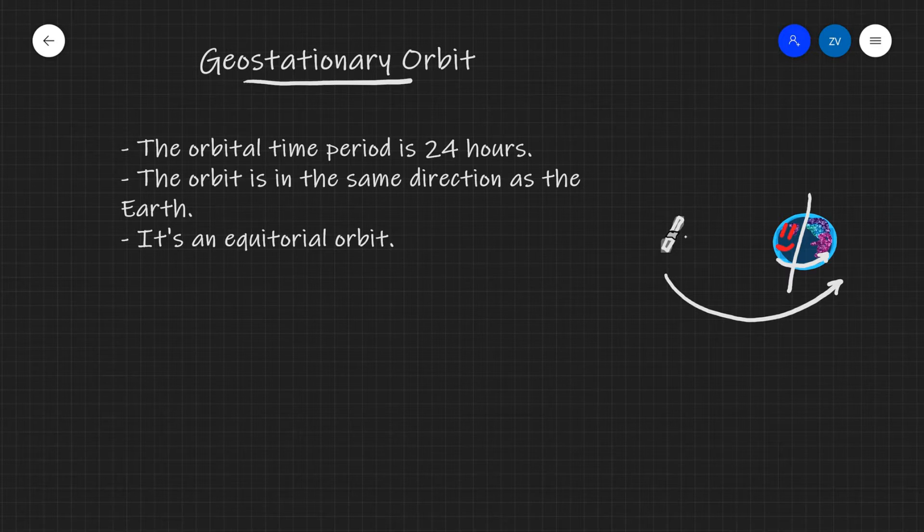This means that this face of the satellite will always be facing exactly the same point on the Earth. The second condition that we need to satisfy is that the orbit needs to be in the same direction as the Earth's orbit. If that's not the case, this is not going to be a geostationary orbit.